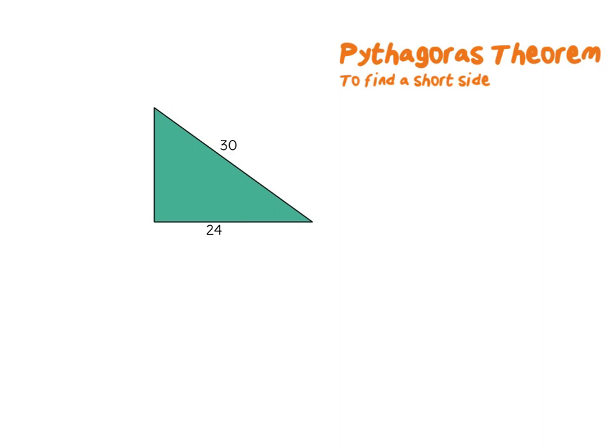Now what if you are given the hypotenuse and one of the short sides but need to find the other short side? How would I work that out? I can say 24 squared plus something squared equals 30 squared. Doing that in reverse, instead of plus I need to minus, so I can say 30 squared minus 24 squared. If I work that out I get 324.